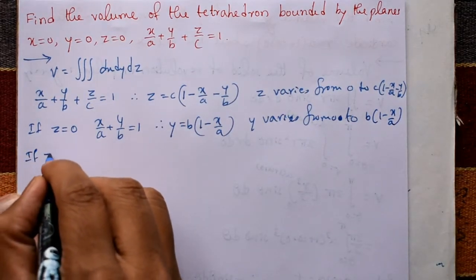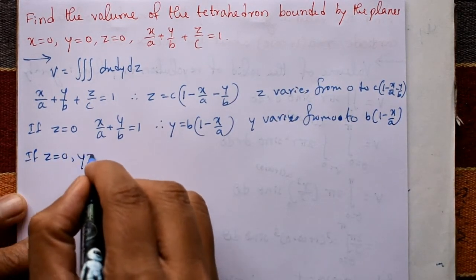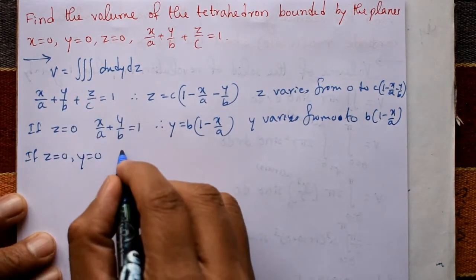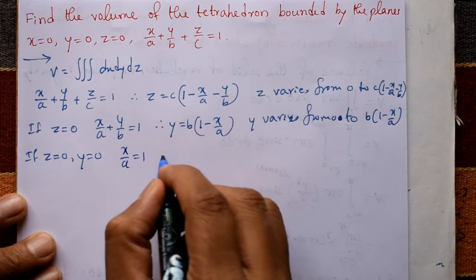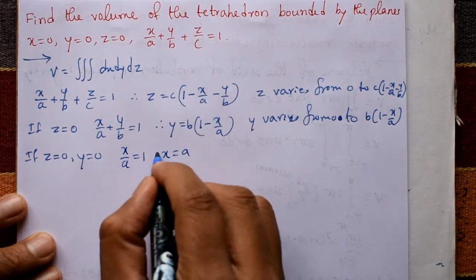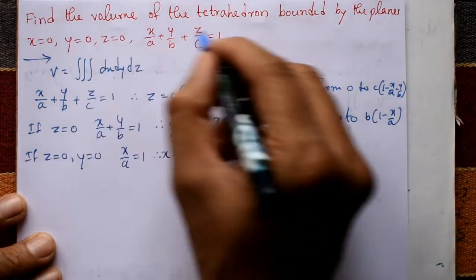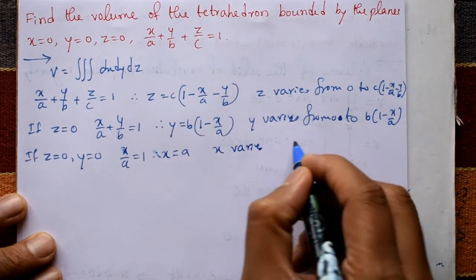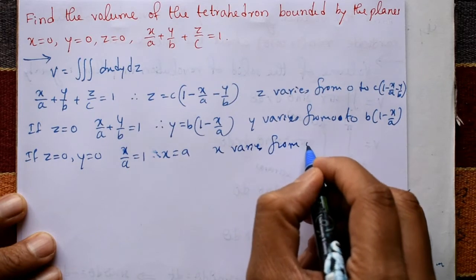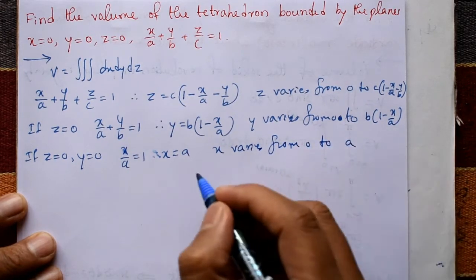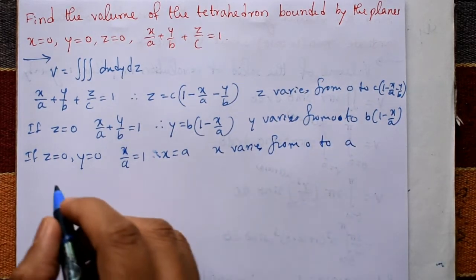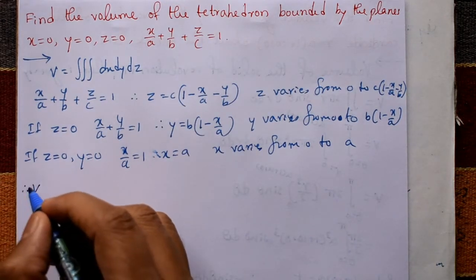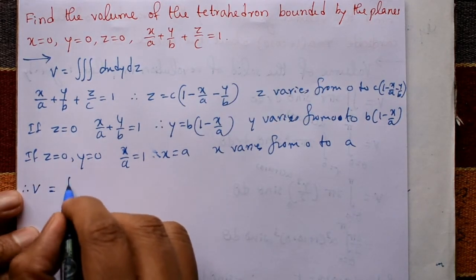Setting z = 0 and y = 0 in the equation gives x/a = 1, so x = a. Therefore x varies from 0 to a.